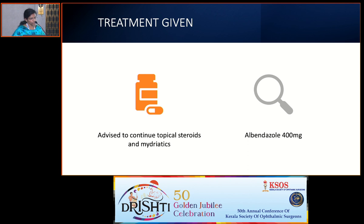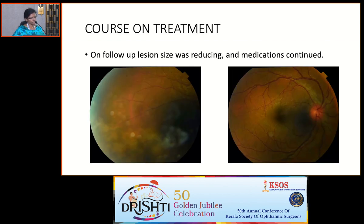Treatment given included topical steroids and mydriatics. In view of DUSN, we started albendazole, and 48 hours later we hiked up the oral steroids from her presenting dose of 10 mg prednisolone to 60 mg. On immediate follow-up after one week, the lesion size was reducing, lesions were fading, she was showing response to treatment, and was symptomatically better.